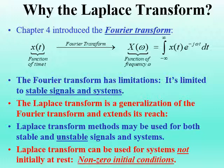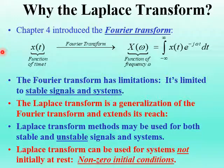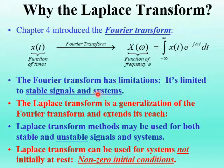After all, in Chapter 4 we learned about the Fourier Transform, which took a function of time, x of t, and converted it into a function of frequency, x of omega. Now the Fourier Transform is a very powerful and useful tool, but it has its limitations. For example, it is limited to just stable signals and systems.